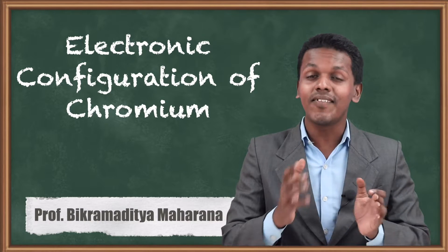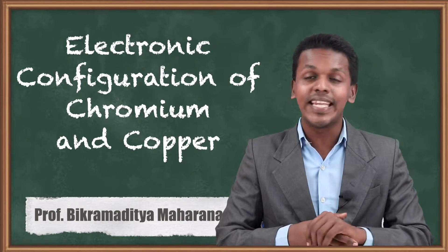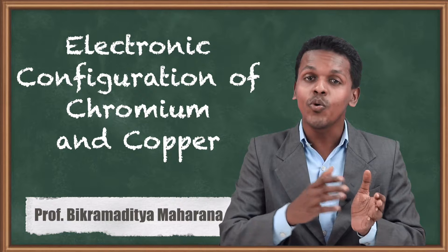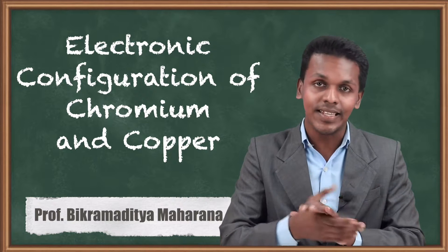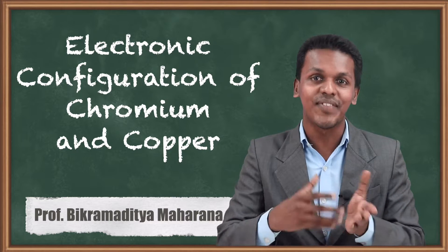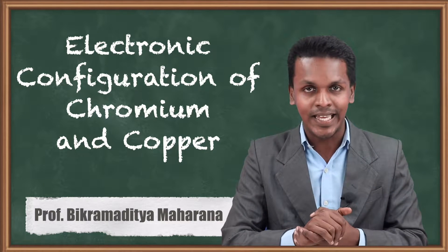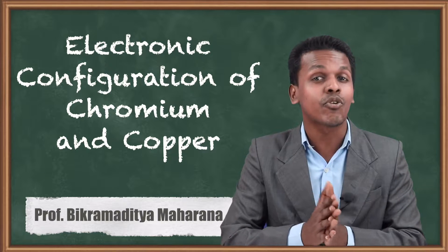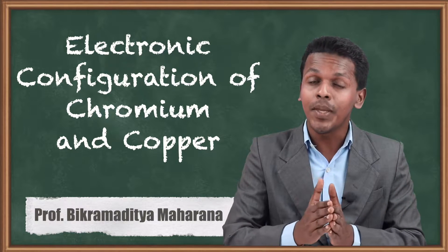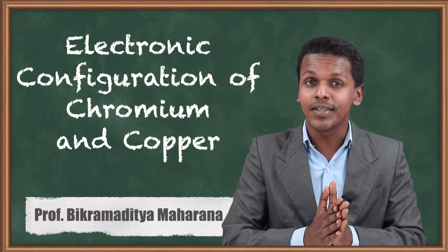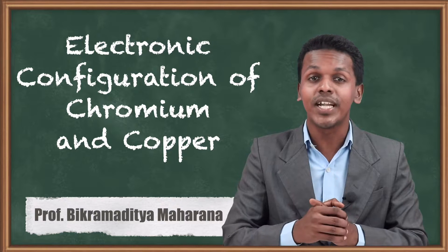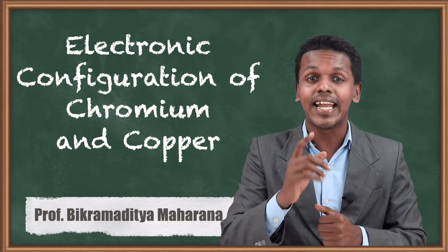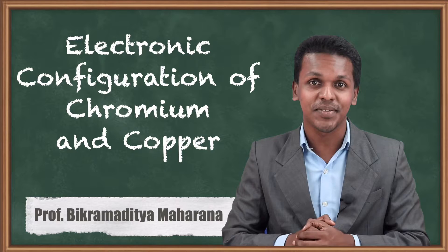Friends, in the previous topic we discussed about electronic configuration and how to represent the electronic configuration of various atoms. So based on that, here we are going to talk about the electronic configuration of Chromium and Copper. This is quite different from the previous one, so let me talk about that difference in this topic.